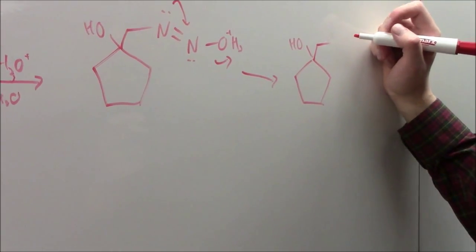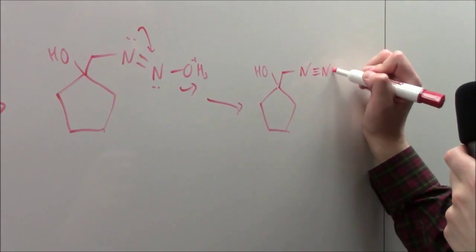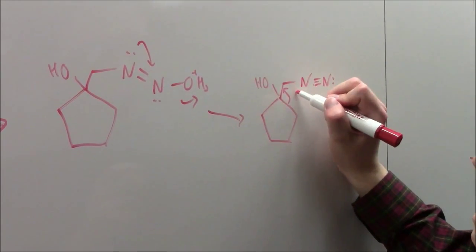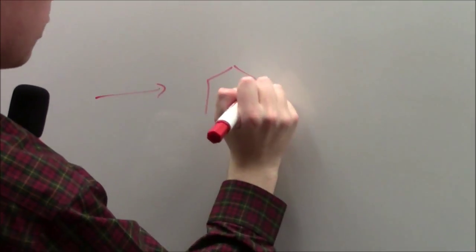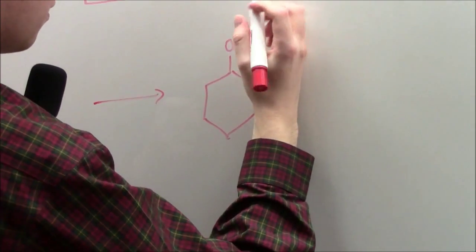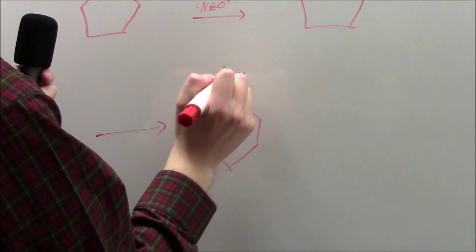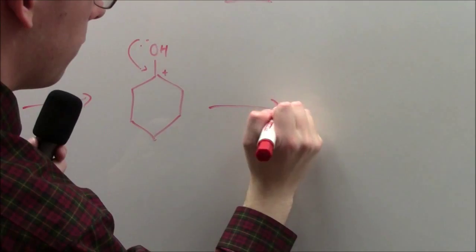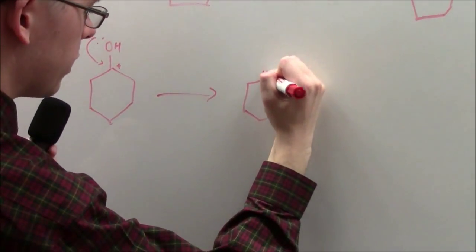This amino-diazonium ion group is ready to be removed by this bond, which will migrate to this carbon and remove this group, which will form a slightly larger six-membered ring, which can rearrange to form a six-membered ketone.